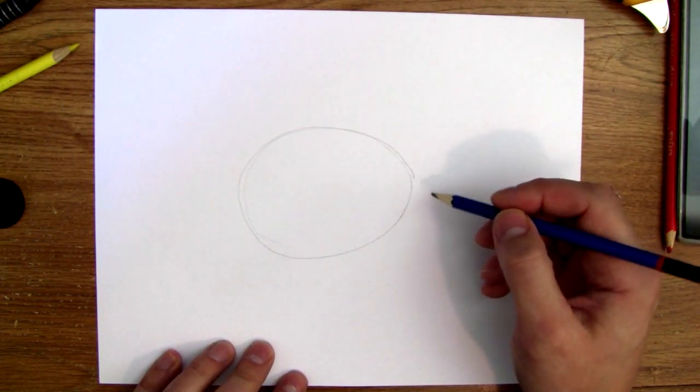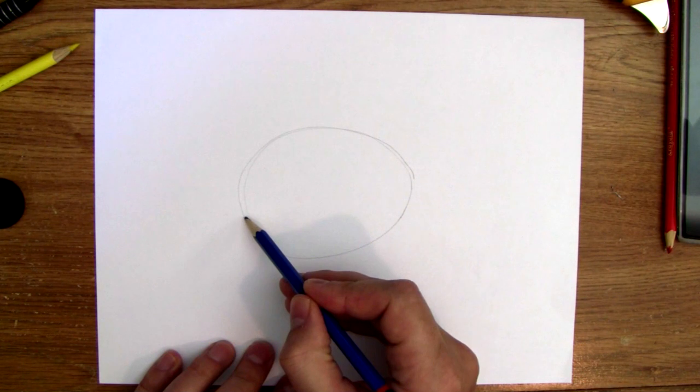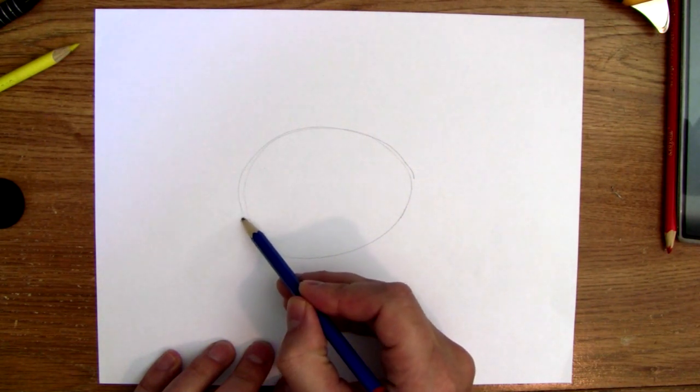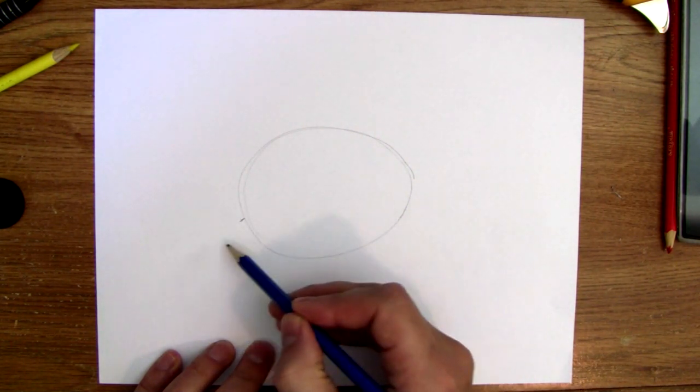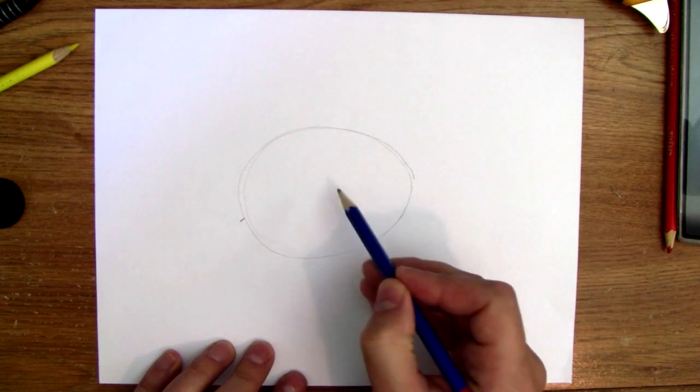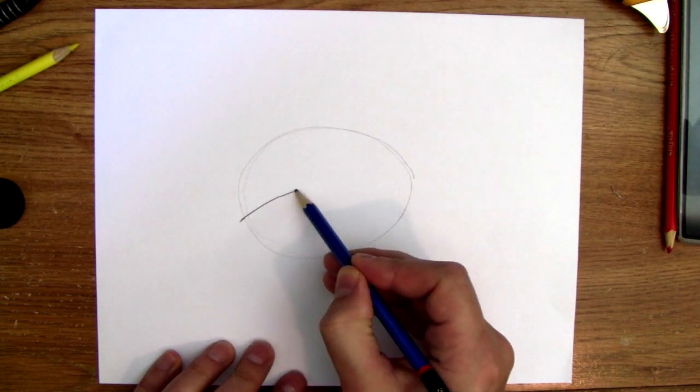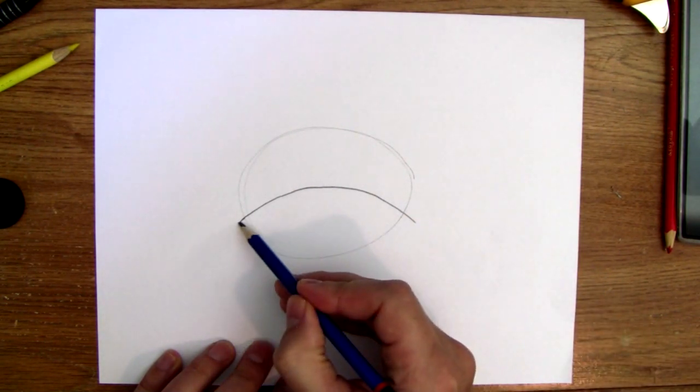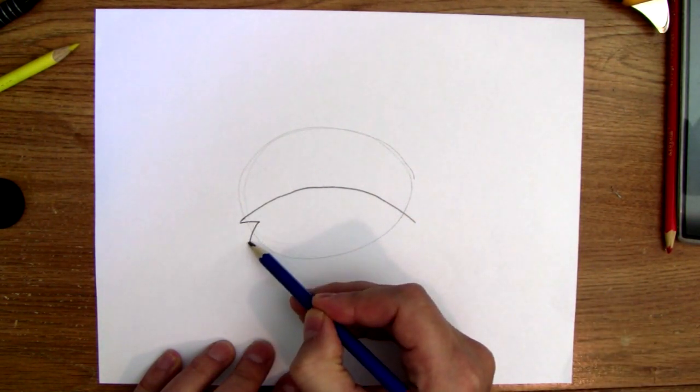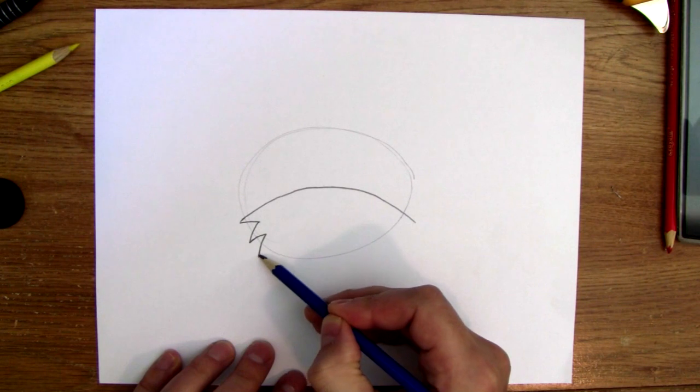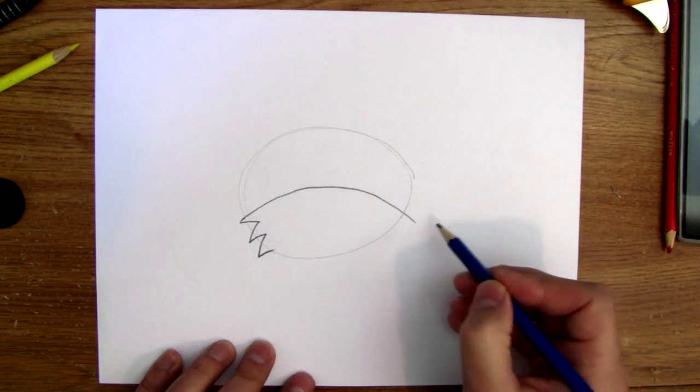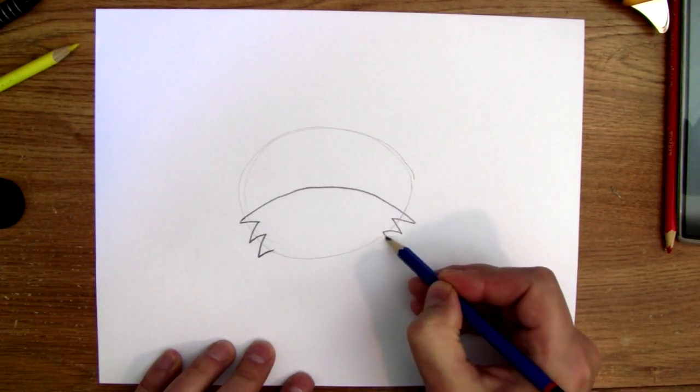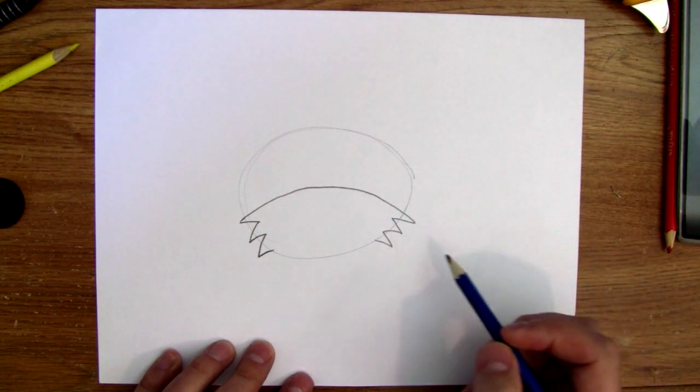And then we're gonna draw his whisker part, and it's gonna go out past the oval and it kind of curves up about here. So it curves up like that, and then it goes in. There's three little jaggies.